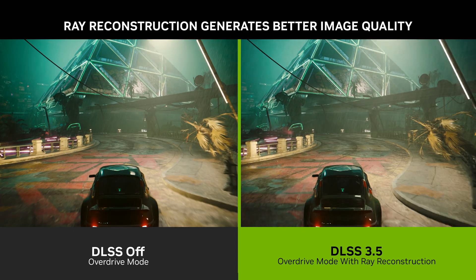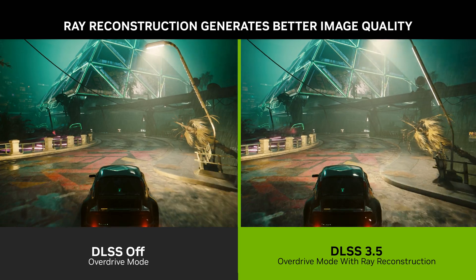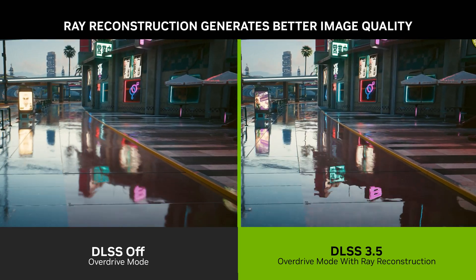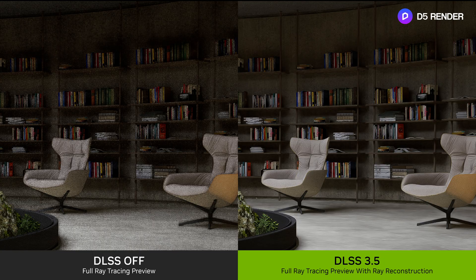DLSS Ray Reconstruction generates higher quality ray traced images. For example, here we're comparing DLSS off to DLSS 3.5 and you can see that DLSS reduces ghosting and improves the dynamic lighting. You can see reflections can be much sharper using ray reconstruction even in movement. Creative applications have a wide variety of content which is challenging for traditional denoisers because they need hand tuning for each scene. As a result, you get sub-optimal image quality when previewing a new scene in a creative app. With DLSS Ray Reconstruction, the AI recognizes all types of scenes and so you can get much higher image quality when you're previewing a scene before committing to a final render.